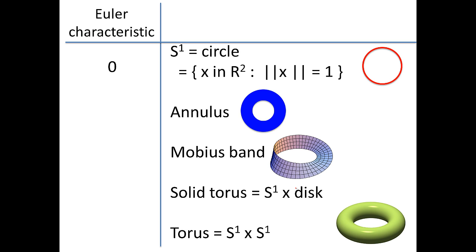Here we have several examples of objects with the same Euler characteristic. The Euler characteristic of the circle is zero — we will leave that as a homework assignment. Given that the Euler characteristic of a circle is zero, we know that the Euler characteristic of an annulus is also zero since we can push an annulus onto a circle. Similarly, the Euler characteristic of a Möbius band is also zero because you can push a Möbius band onto the circle, changing its topology but preserving the Euler characteristic. The Euler characteristic of a solid torus is also zero because we can push it onto a circle as well.